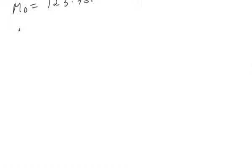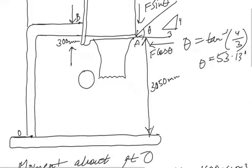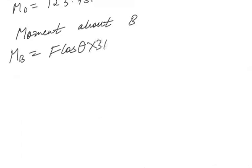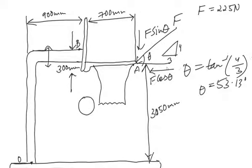For the moment about point B, M_B, it is again due to Fcosθ and Fsinθ. The perpendicular distance of Fcosθ to point B is 300 mm, as given by the thickness. So we get Fcosθ × 300 × 10⁻³ minus Fsinθ, which is clockwise, times the perpendicular distance of 700 mm.